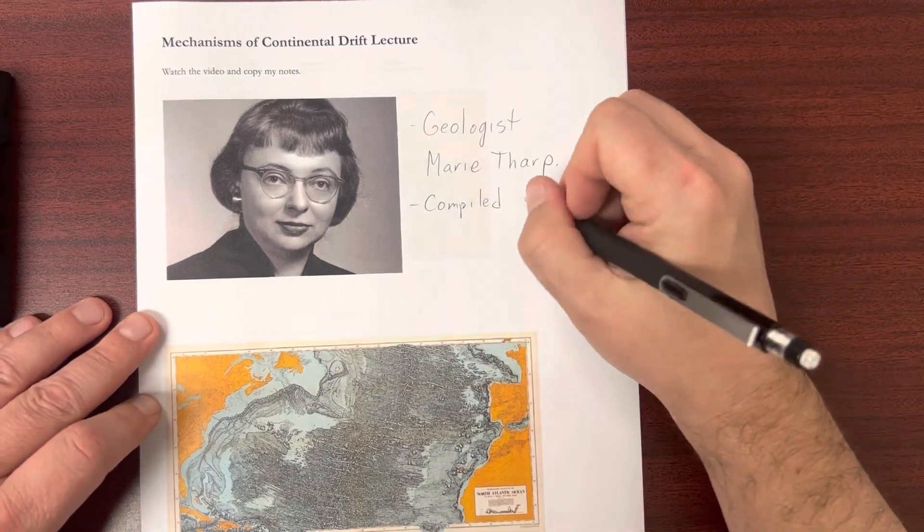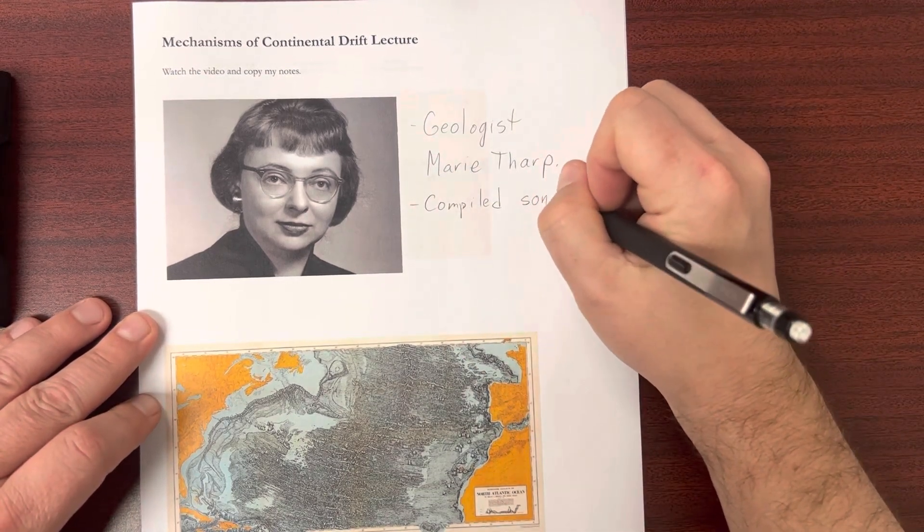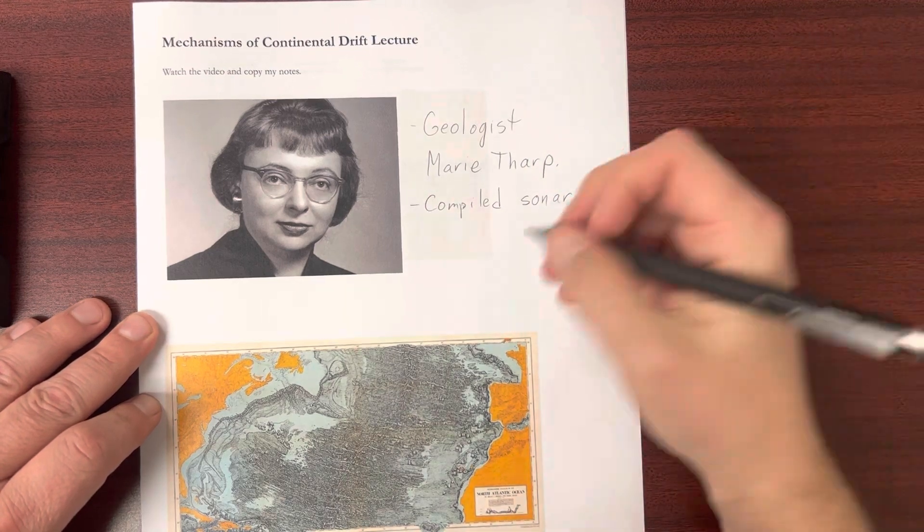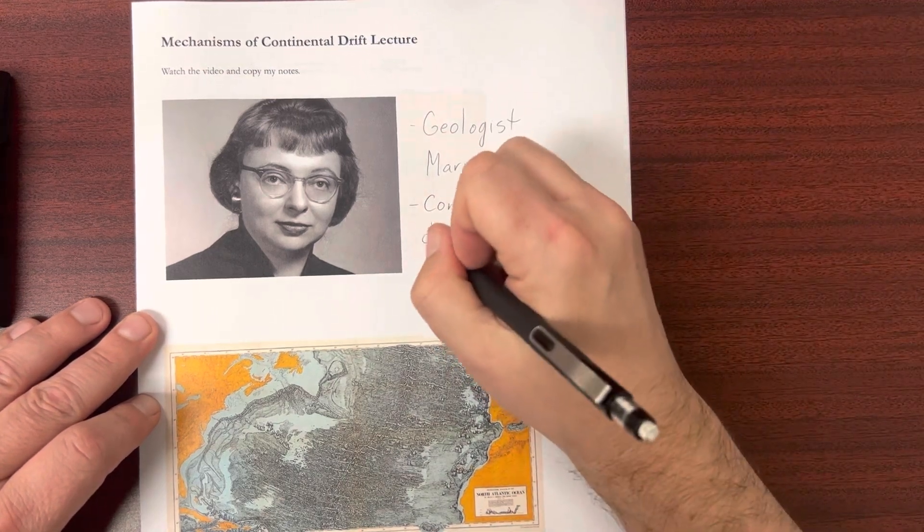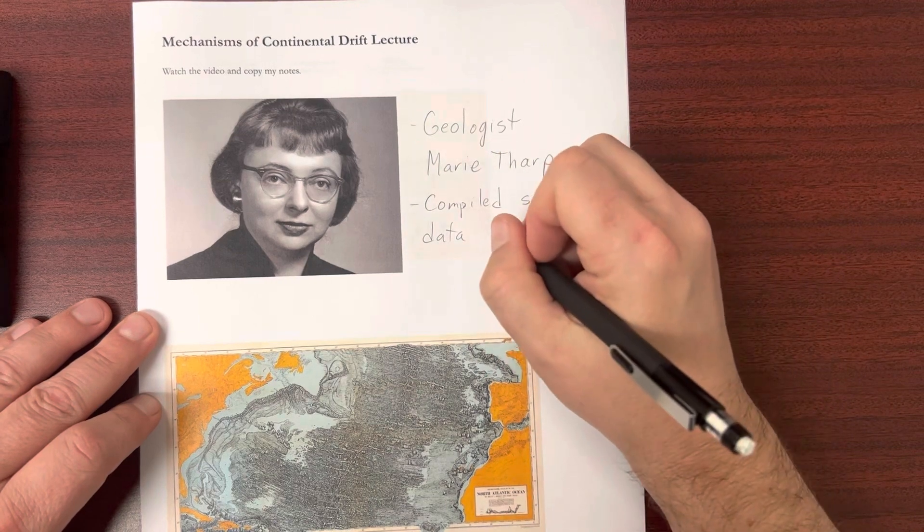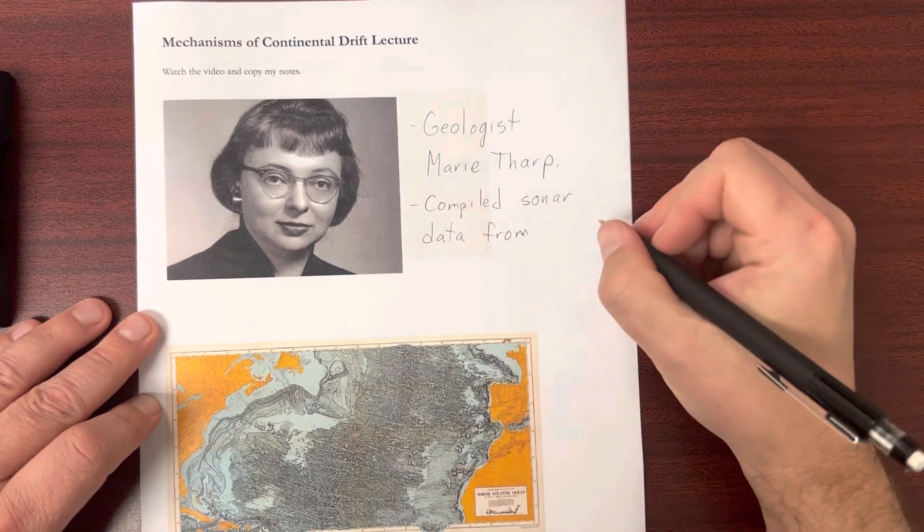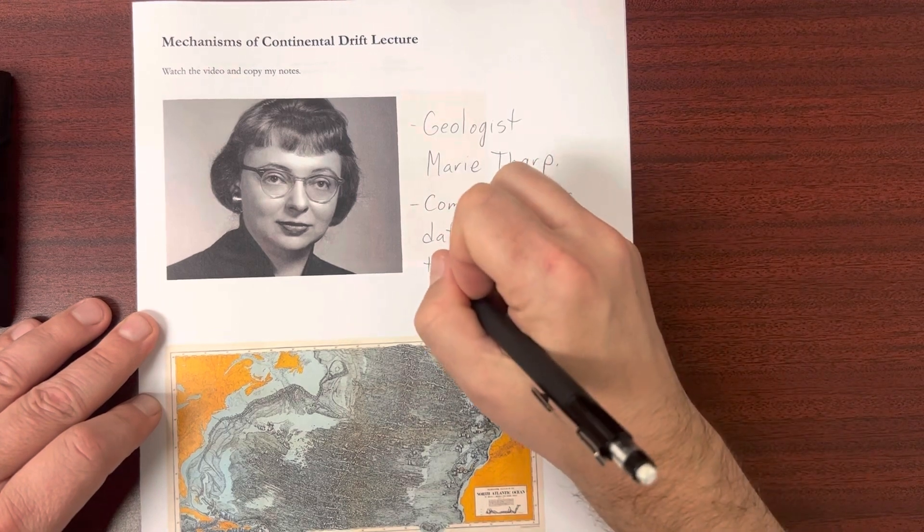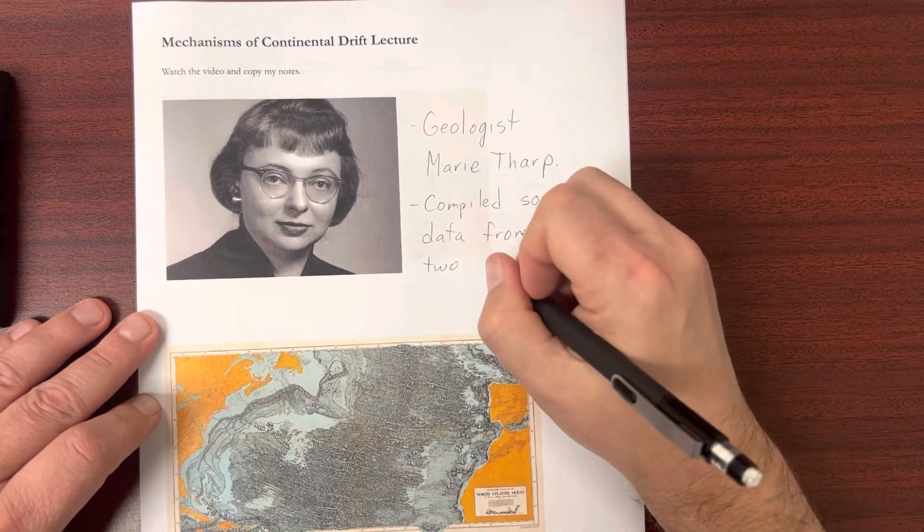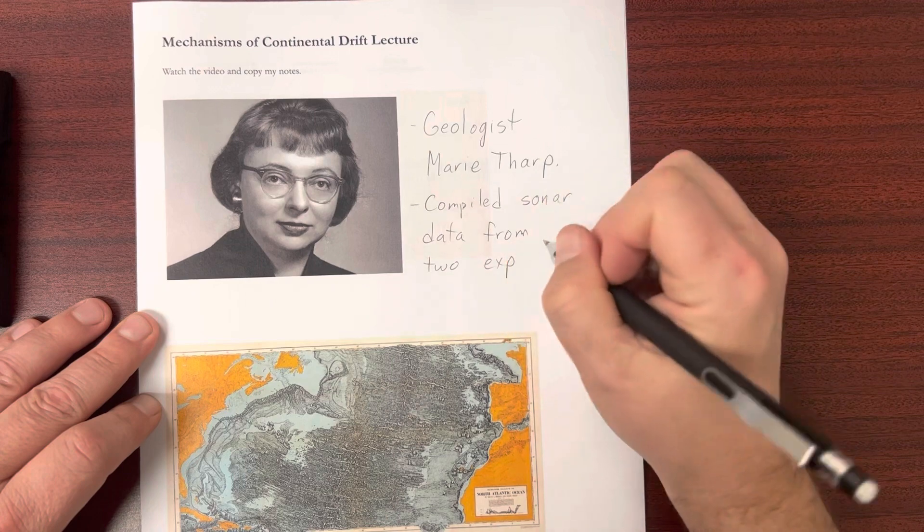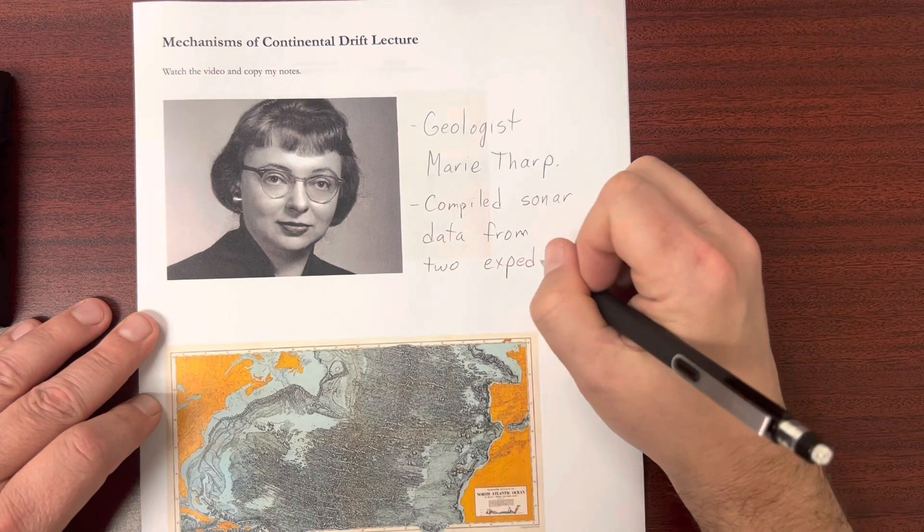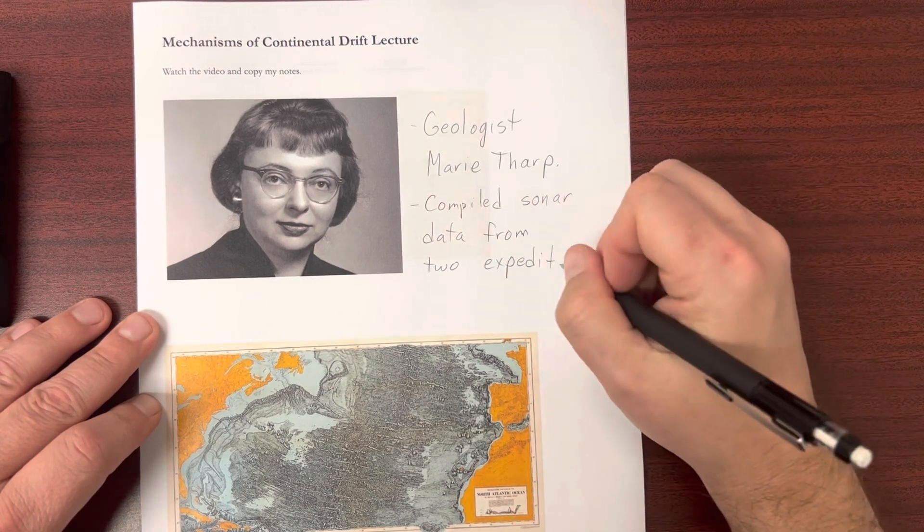So anyway, she gathered all of this sonar data from two ships that had previously gone around the world and taken sonar soundings of the ocean floor. And again, it was all a bunch of raw data, so nobody knew what it meant until you started to put it together. And that's what Marie was doing.